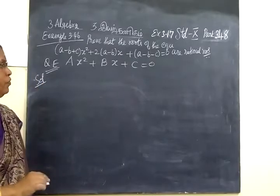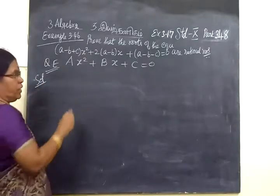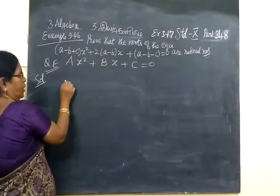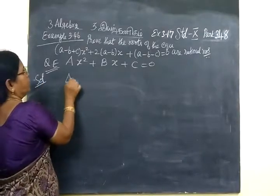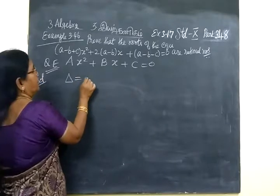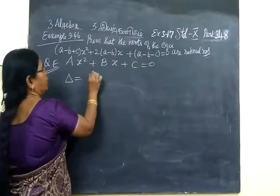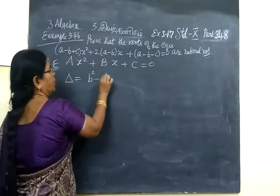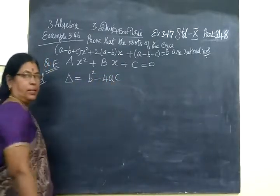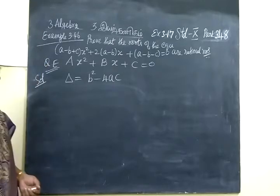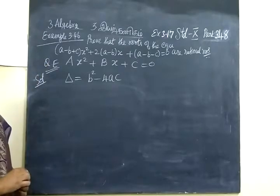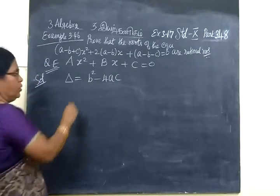If we are given a quadratic equation, we find the discriminant value. Delta is equal to — we want to find the nature of the roots.